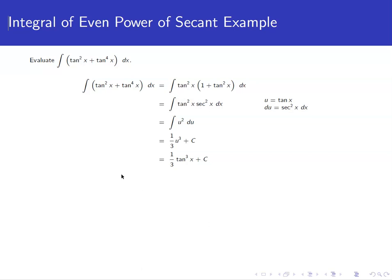We want to look at the integral of tangent squared plus tangent to the fourth dx. The first thing we notice is we have a common factor of tangent squared we can pull out of the terms in the integrand. So we'll get tangent squared x times 1 plus tangent squared x dx.